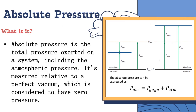Now let us define absolute pressure and gauge pressure. Absolute pressure is the total pressure exerted on a system, including the atmospheric pressure. It is measured relative to a perfect vacuum, which is considered to have zero pressure. Note that absolute pressure can never be negative. It can be expressed as: absolute pressure equals gauge pressure plus atmospheric pressure.